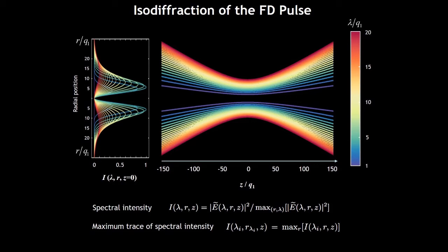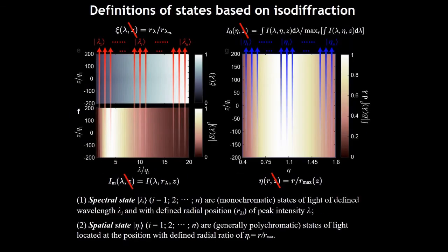And the right one is the trajectories of various colors, the maximum position of various colors. As it's seen that the various colors diffract at the same rate. And the blue light is always confined inside and the red light is outside.